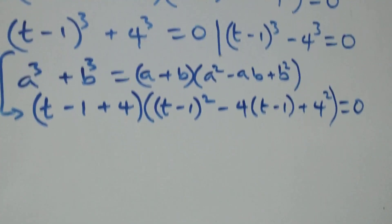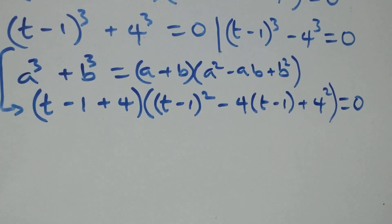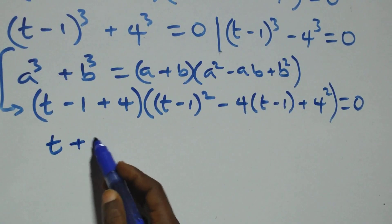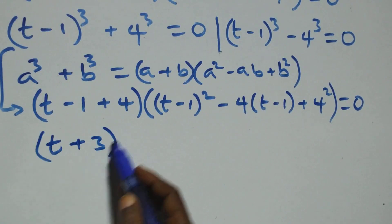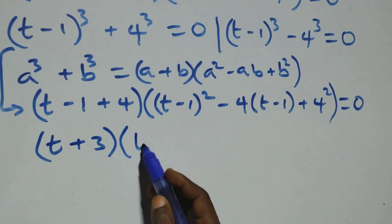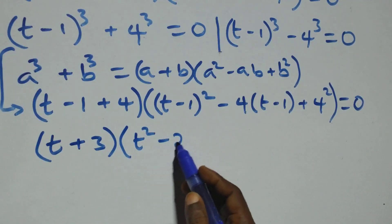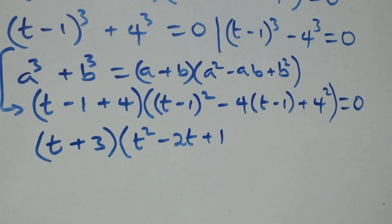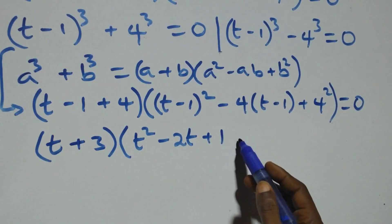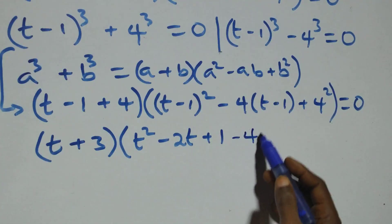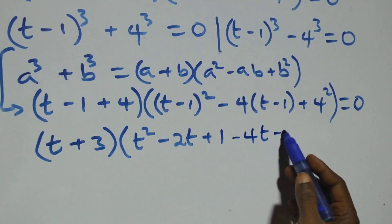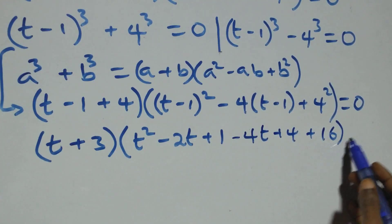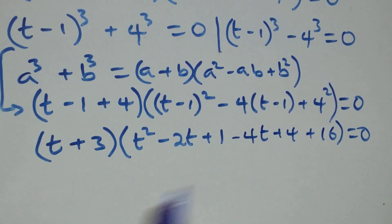This becomes (t + 3) times (t² − 2t + 1 − 4t + 4 + 16). Opening the bracket we have minus 4t plus 4, then plus 4 squared, that is 16.